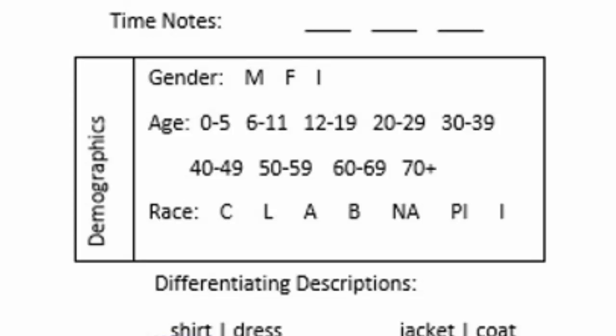The demographic information includes gender, with the option to circle male, female, and indeterminate, as well as age, which allows you to select the most suitable age range you can estimate. For race, you may select Caucasian, Latino, Asian, Black, Native American, Pacific Islander, or indeterminate. If you are at all unsure, please choose indeterminate.